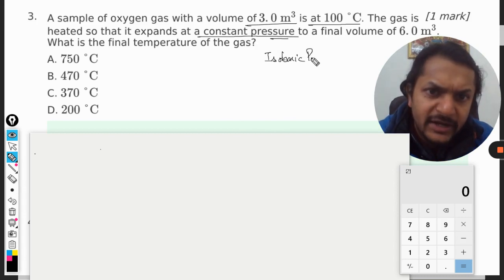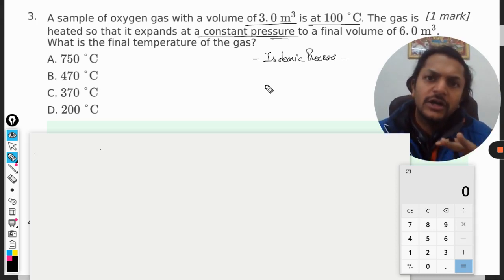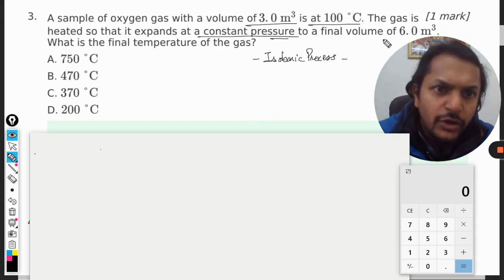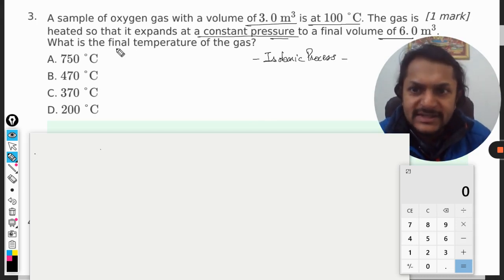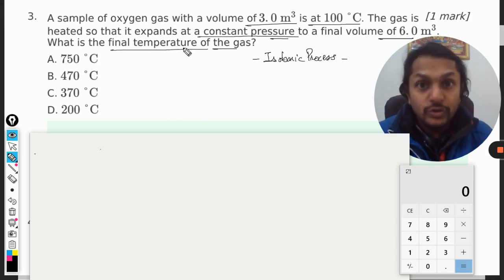Now what happens in isobaric process is that pressure does not change for the gas. The final volume is 6.0 m³ and what is the final temperature of the gas? How to do this thing?